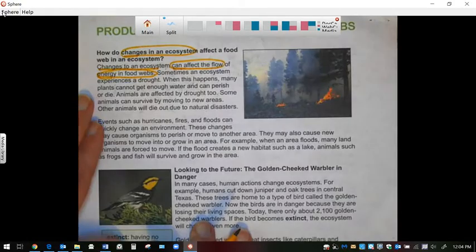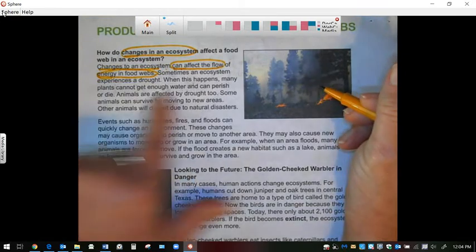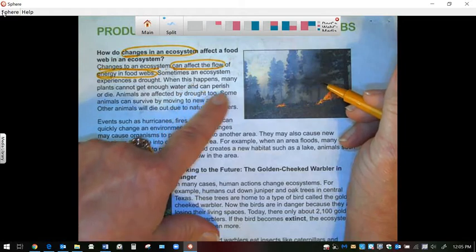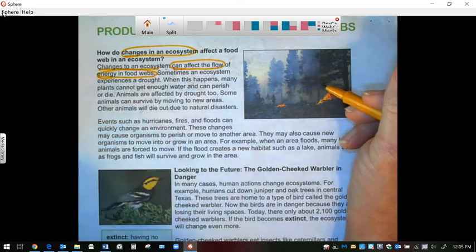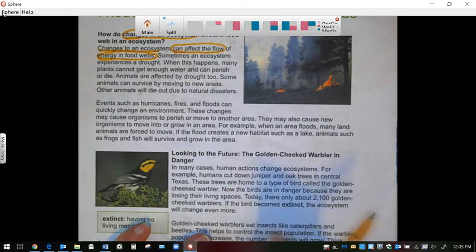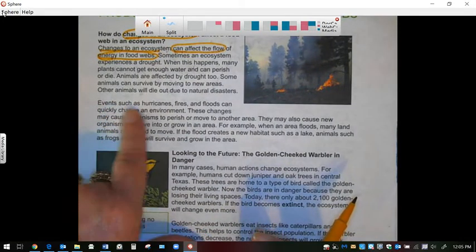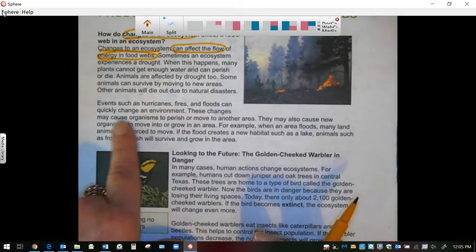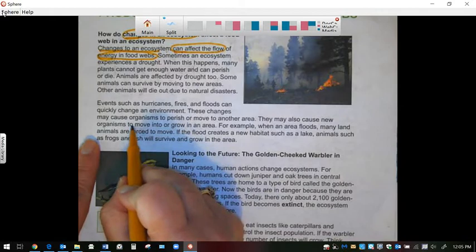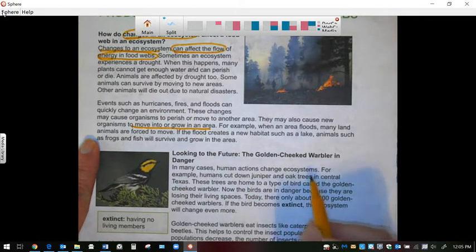In other words, like here it says, if there's a drought, when this happens, many plants cannot get enough water, and they perish or die. So animals that eat those plants are also going to die, or they're going to have to move. Events like a hurricane, fires, and floods can change an environment and causes new organisms to move into or grow in an area.